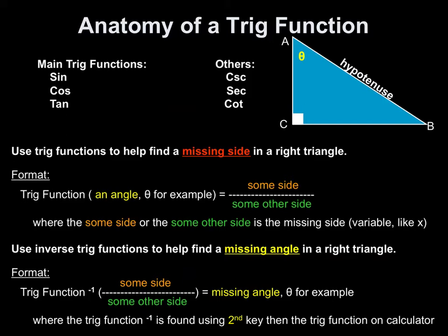Some more anatomy of a trig function. We can use trig functions to find missing sides, and we're going to stick with these at this time, the main trig functions. We can use it to find missing sides if we're given an angle. We can use inverse trig functions to find angles. So there's two different ways that we can solve trigonometric problems in a real world setting.